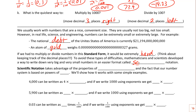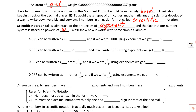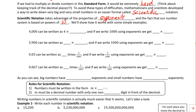To avoid this difficulty when multiplying and dividing very big or very small numbers, mathematicians and scientists figured out a way to write them in an easy format called scientific notation. Scientific notation takes advantage of the properties of exponents and the fact that our number system is base 10.